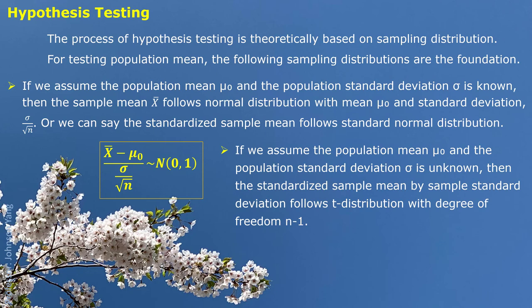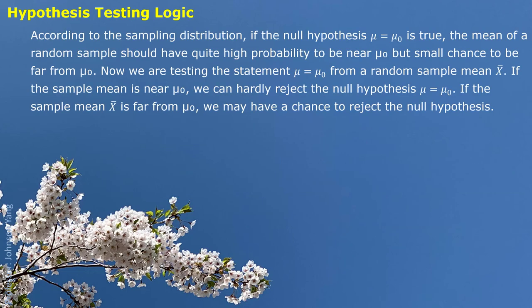Another sampling distribution applies when we still have a population with mean mu0, but we do not know the population standard deviation sigma. In this case, we can still standardize the sample mean by using the sample standard deviation s: (x-bar minus mu0) divided by (s over square root n). This random variable follows the t-distribution, also called the Student distribution, with degrees of freedom equal to sample size minus one.